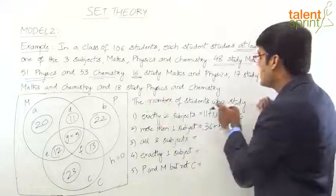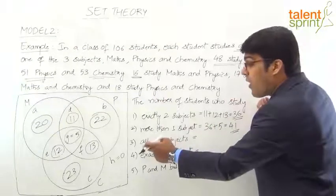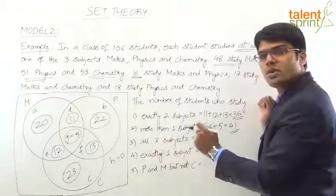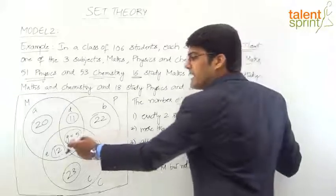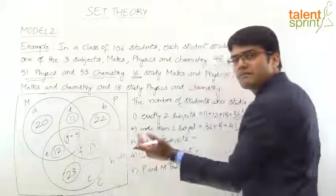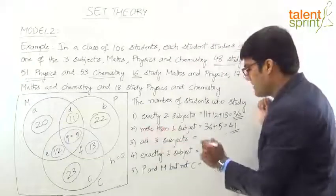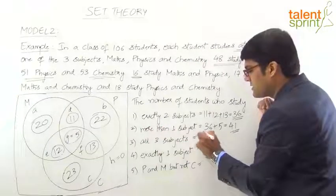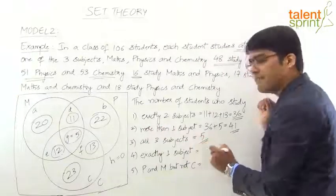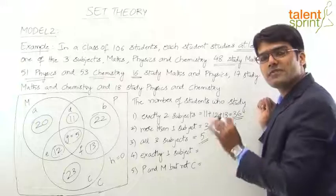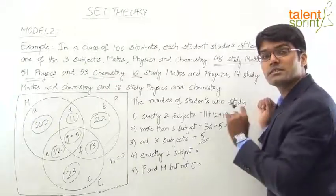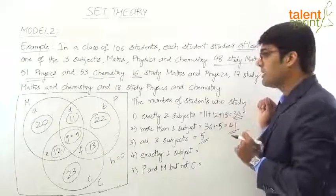Third question: the number of students who study all three subjects. This is a direct value — G = 5. Five students study all three subjects.